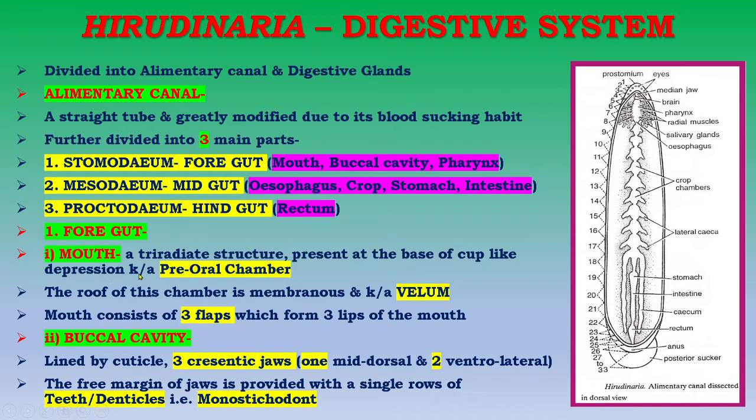The foregut consists of the mouth, which is a tri-radiate structure present at the base of a cup-like depression known as the pre-oral chamber. The roof of this chamber is membranous and is known as the velum. The mouth consists of three flaps which form three lips.